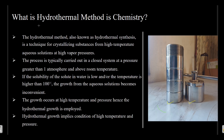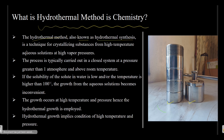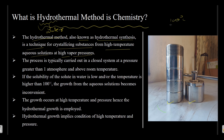First, let's understand what the hydrothermal method in chemistry is. The hydrothermal method, also known as hydrothermal synthesis, is a technique for crystallizing substances from high-temperature aqueous solution at high vapor pressure. 'Hydro' means water — we make a solution of some substance in water, a substance that is insoluble in water up to 100°C. The process is typically carried out in a closed system at a pressure greater than one atmosphere and above room temperature.